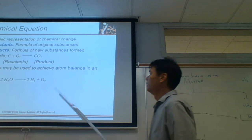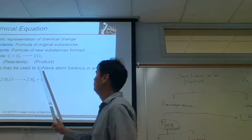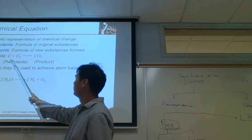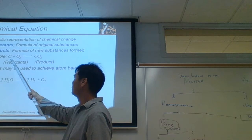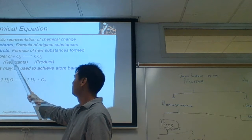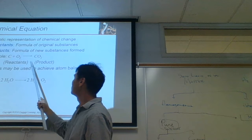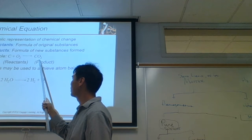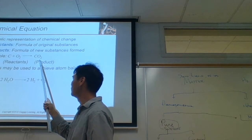We're also going to look at chemical equations — for example, the burning of charcoal. Charcoal is carbon. Carbon plus oxygen forms CO2, or potentially carbon monoxide.